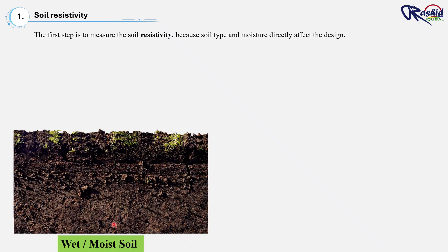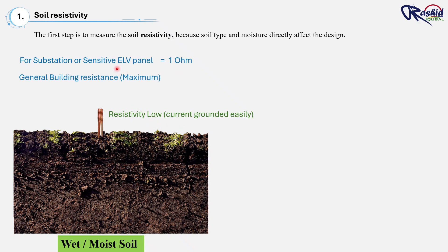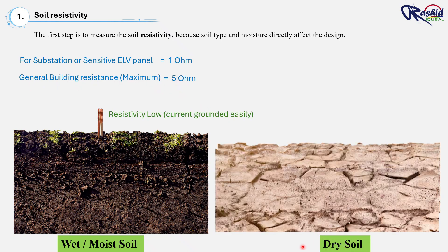The first step is to measure the soil resistivity, because soil type and moisture directly affect the design. If soil is wet or containing good moisture, its resistivity is low, which means the current can flow easily through the ground. As a result, it becomes much easier to achieve the target earth resistance. Typically below 1 ohm for substations or sensitive ELV panels, and below 5 ohms for general building earthing. If the soil is dry or sandy, it doesn't conduct electricity well, so current cannot flow easily. In such cases, resistance stays high until the electrode reaches moist soil or the water level where it drops and earthing becomes effective.